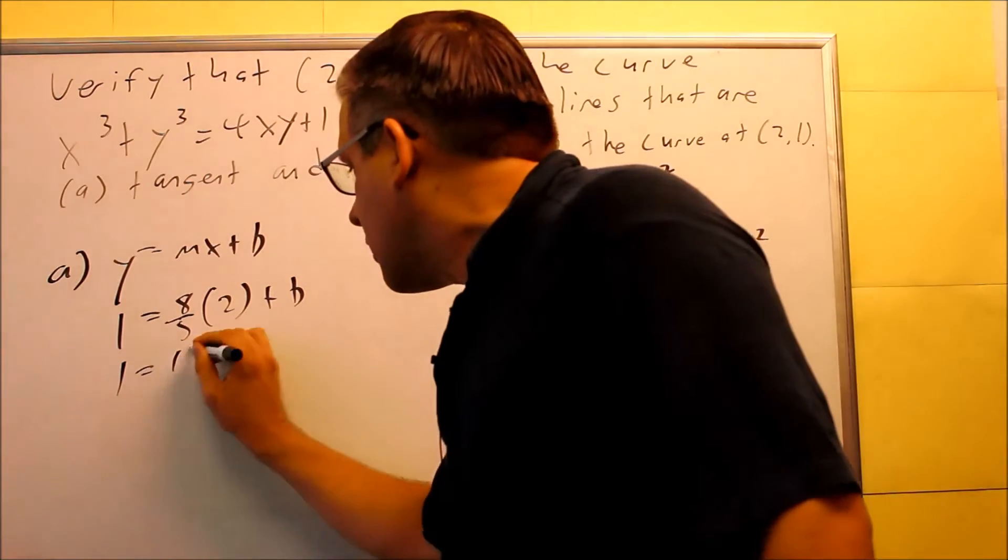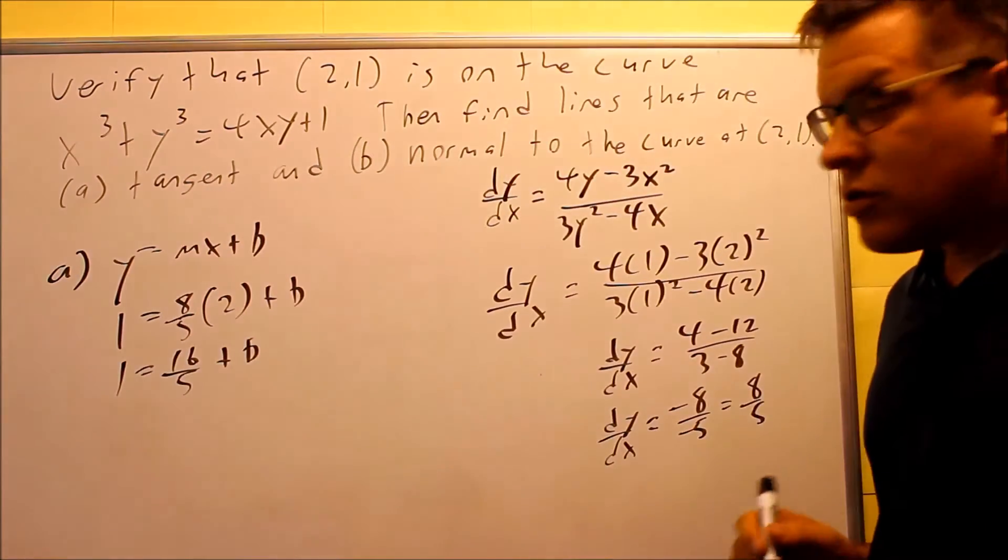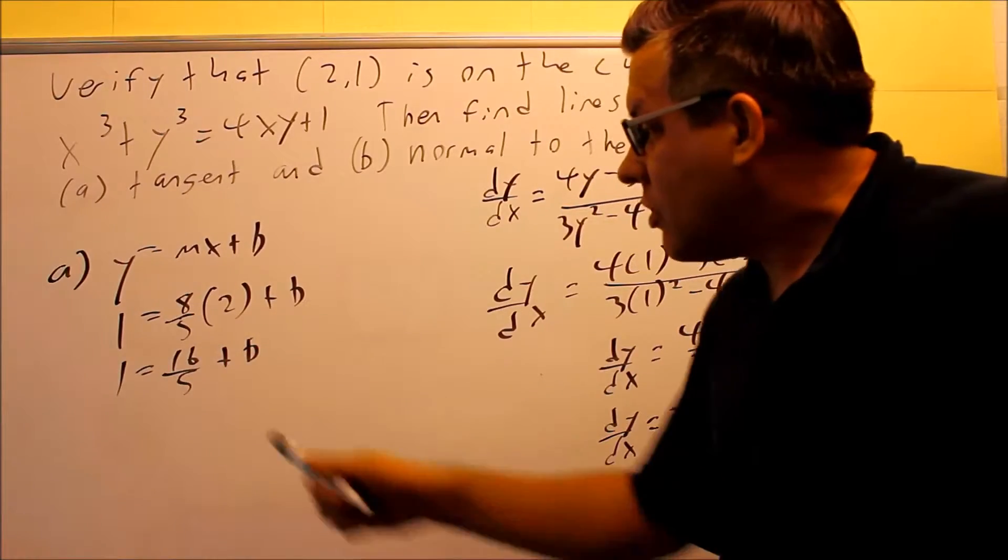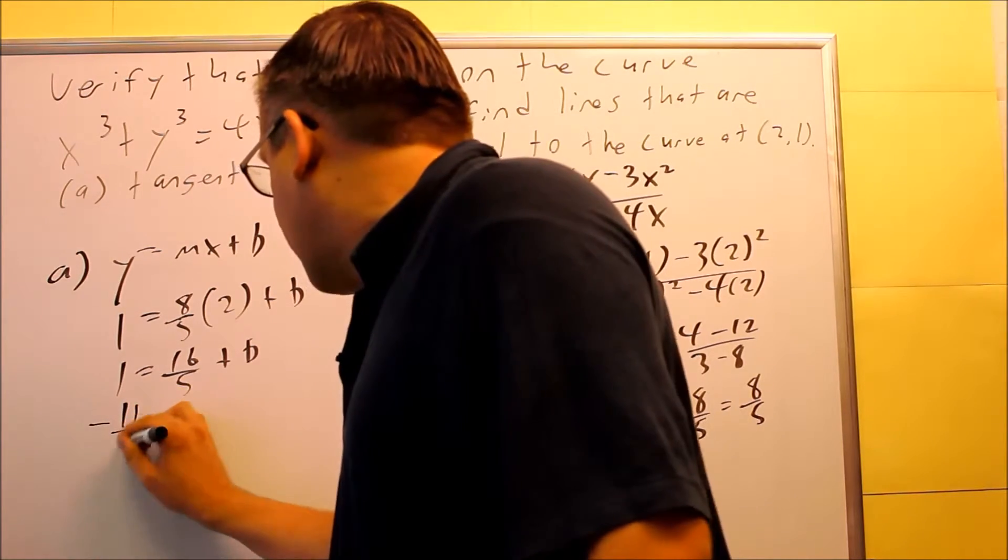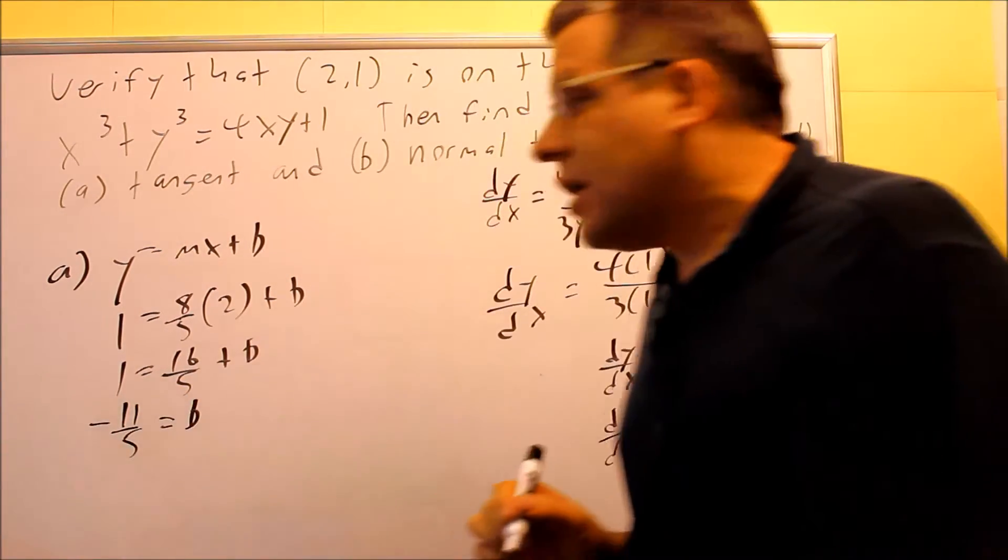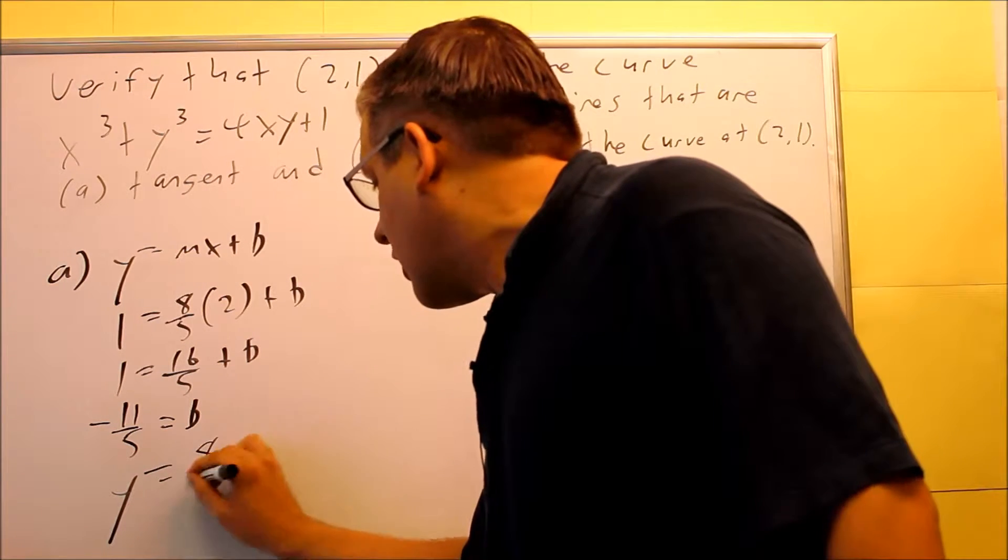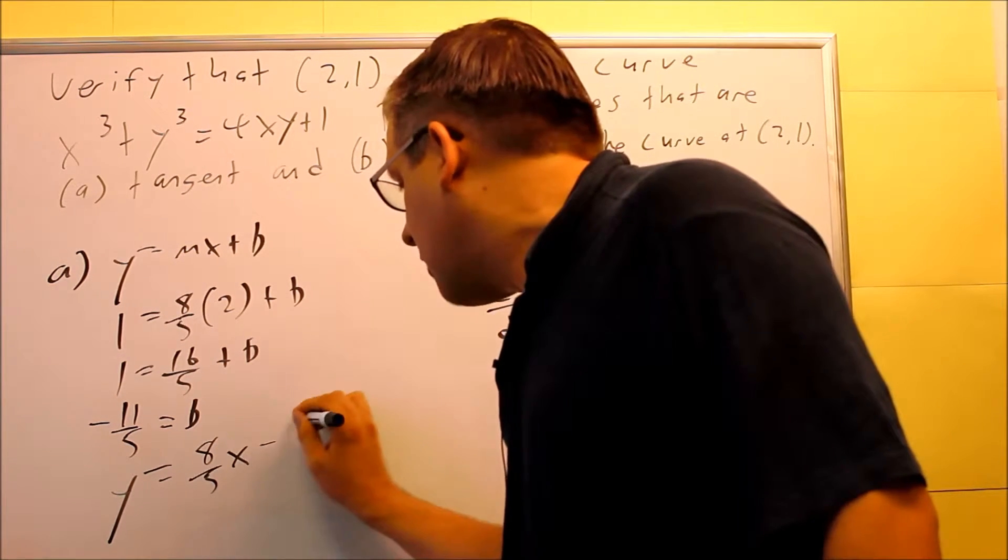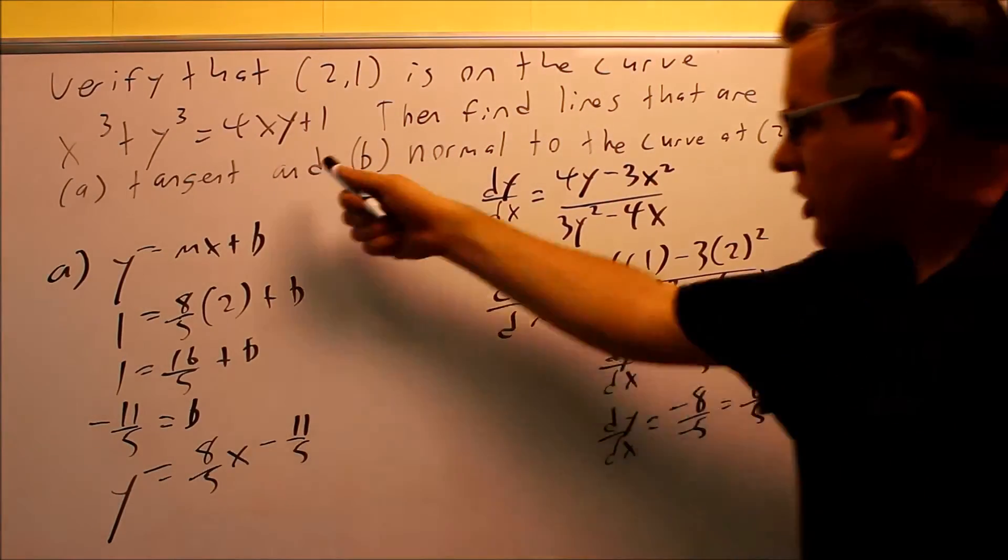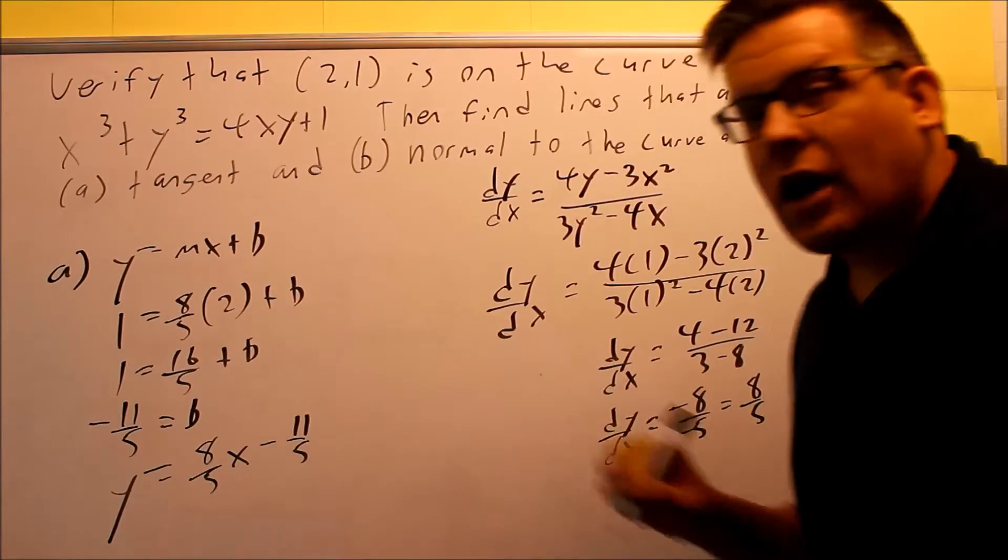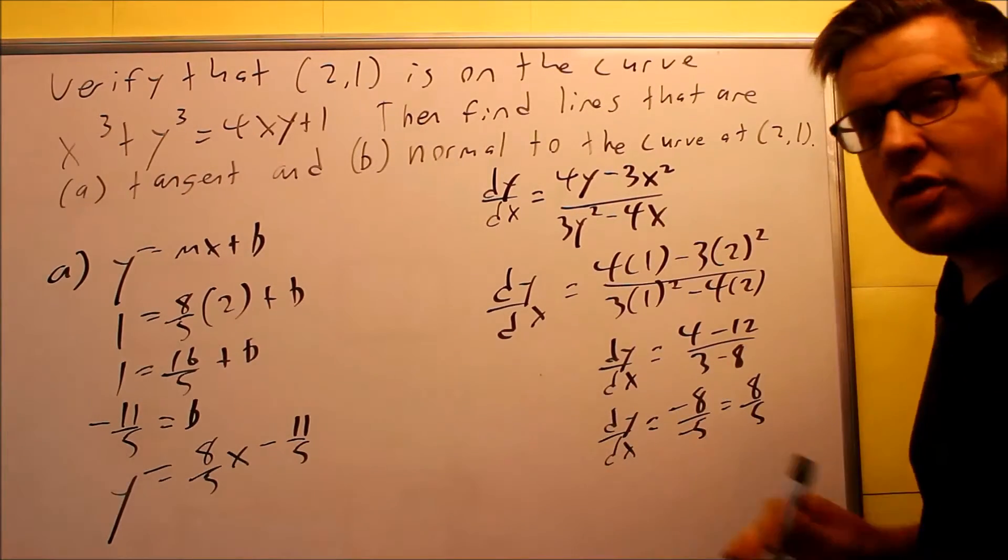When we solve for that, we get 16 fifths. Then we just want to subtract. We have 5 fifths minus 16 fifths, and when we subtract that, we get a negative 11 fifths for b. So then we can write our equation. y equals 8 fifths is our slope, x minus 11 fifths. So that's the answer for part A. That would be a y that is tangent to the curve at 2 comma 1.